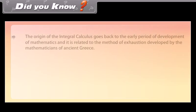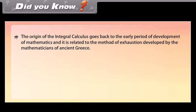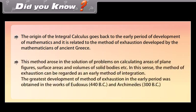Did you know — the origin of integral calculus goes back to the early period of development of mathematics and is related to the method of exhaustion developed by the mathematicians of ancient Greece. This method arose in the solution of problems on calculating areas of plane figures, surface areas, and volumes of solid bodies. The method of exhaustion can be regarded as an early method of integration. The greatest development in this area was obtained in the works of Eudoxus (440 BC) and Archimedes (300 BC).